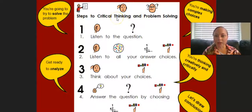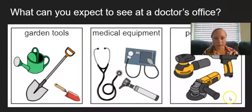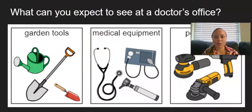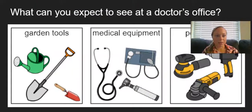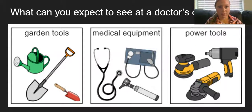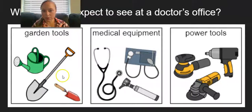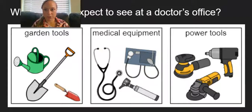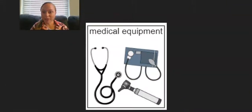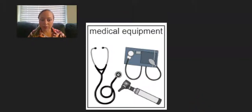Okay. We have some questions coming up. So let's review the steps to critical thinking and problem solving. We need to listen to the question, listen to all of the answer choices, think about the choices, and answer the question by choosing one of the answer choices. What can you expect to see at a doctor's office? Okay. Can you expect to see garden tools, medical equipment, or power tools? Make a choice. Good. You can expect to see some medical equipment like what we just saw in our video at a doctor's office. Fantastic. Two stars.